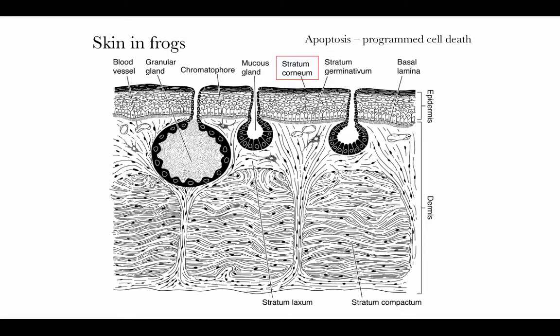Another big change going from fish to tetrapods is that skin glands, rather than being unicellular, become multicellular in tetrapods. These multicellular glands can store secreted materials in storage chambers and release them in very large quantities. In amphibians in particular, one function of the skin is cutaneous respiration — exchanging oxygen and carbon dioxide through the skin. To do this, that skin must be kept always moist, since gases dissolve in liquid before they can be absorbed. The many mucus glands in frog skin serve the purpose of keeping that skin moist for respiratory exchange.